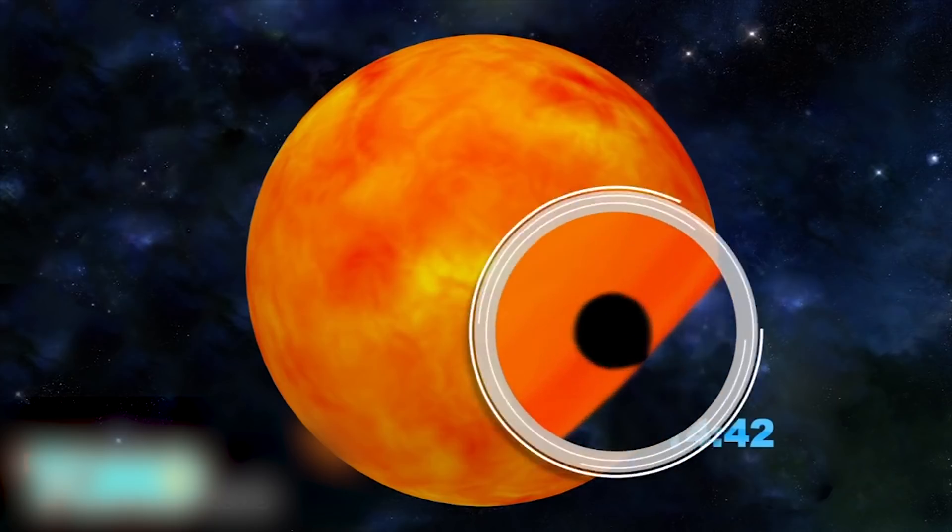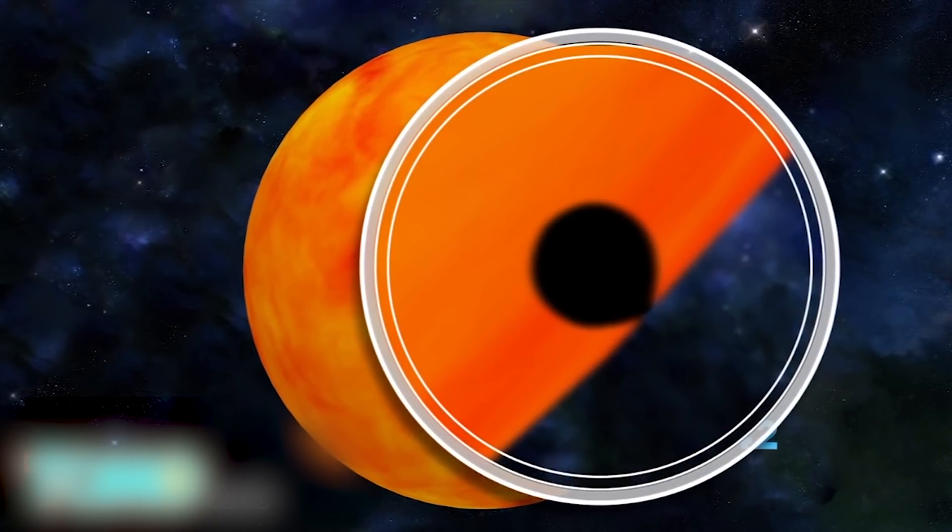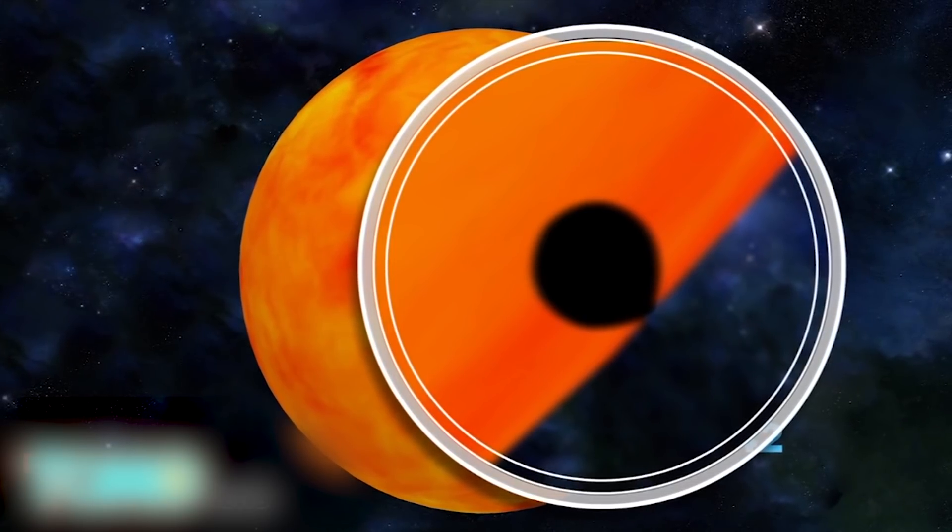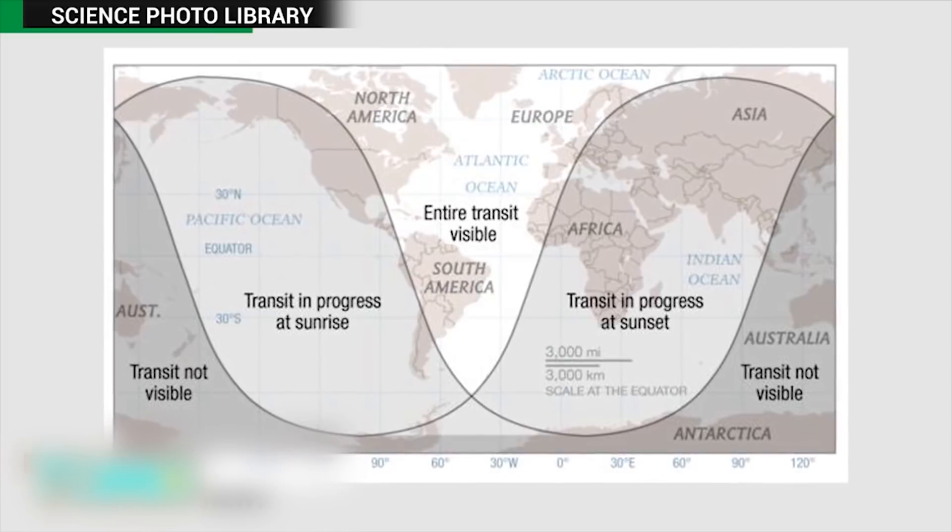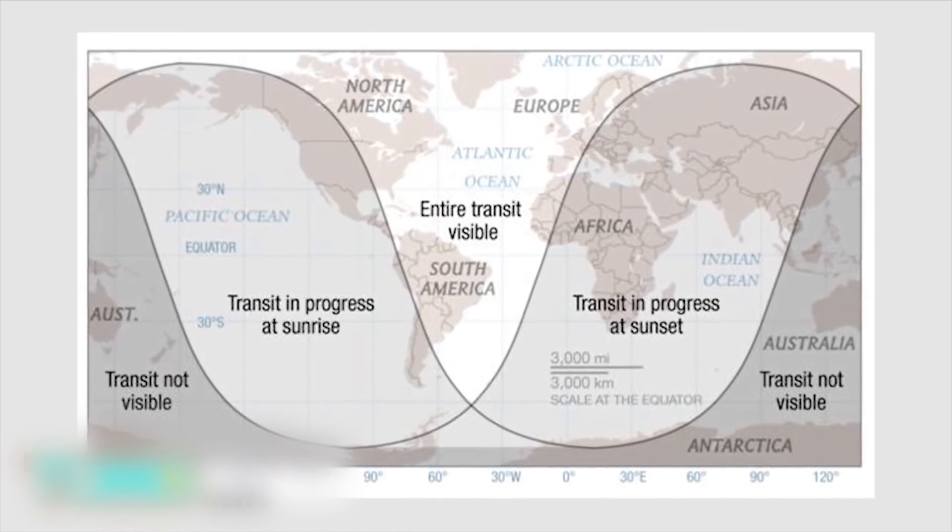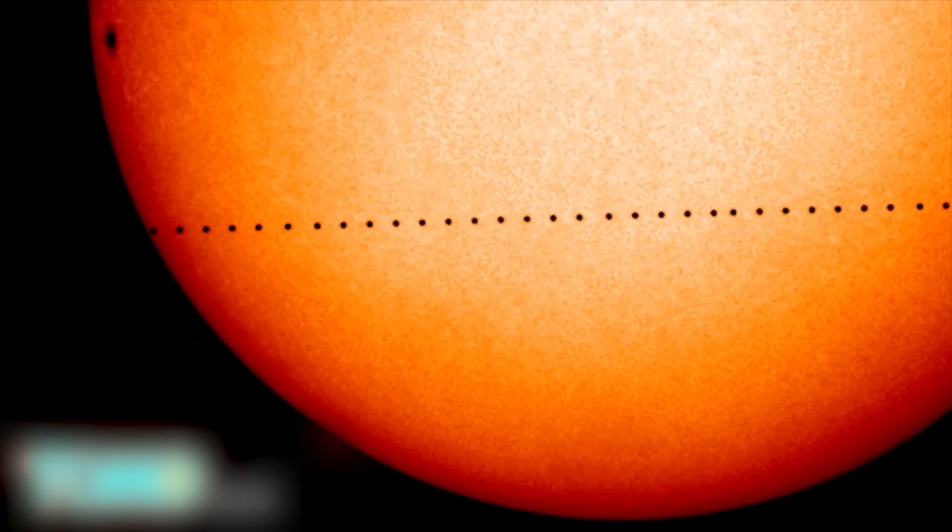An interesting phenomenon that can be observed is the black drop effect, which occurs when Mercury's edge forms a teardrop shape as it touches the sun's edge. Mercury's flit across the sun will be visible through much of Western Europe, Northwestern Africa, and the Americas, while other areas of the world may see part of the transit.